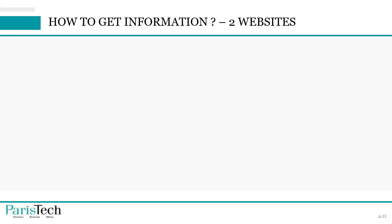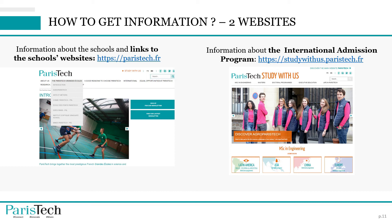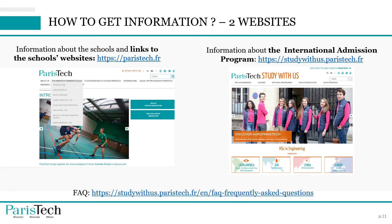There are two websites where you can get information about the PariTech International Admission Program. The first is paristech.fr, where you will find information about the schools, links to school websites, and information about the international admission program. On studywithus.paristech.fr, you can find links to all different campaigns and the link to the application platform. Starting from the home page of studywithus.paristech.fr, pick the campaign you belong to. If you have any questions before sending an email, you can check the FAQ, also available on studywithus.paristech.fr.